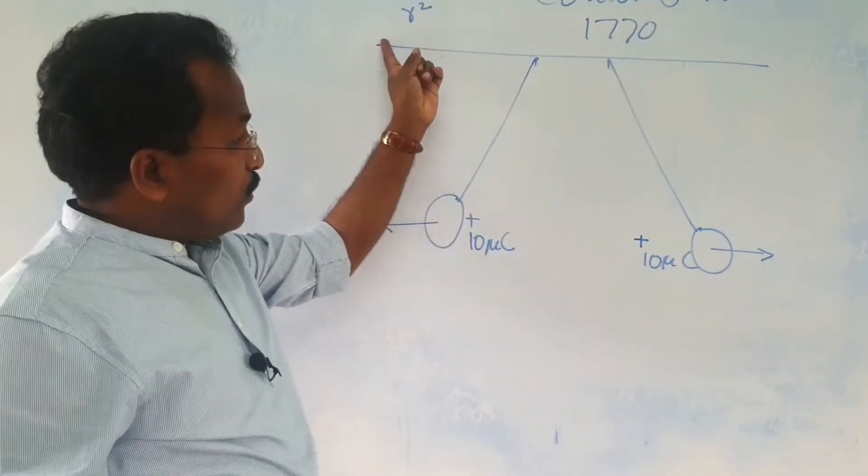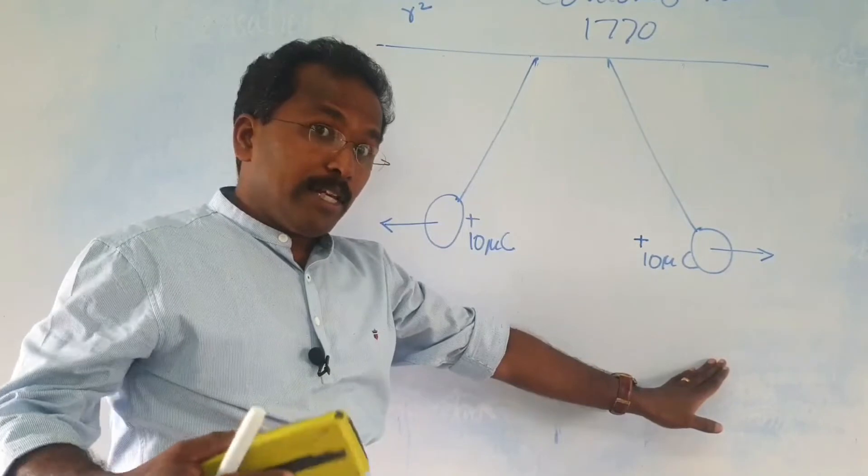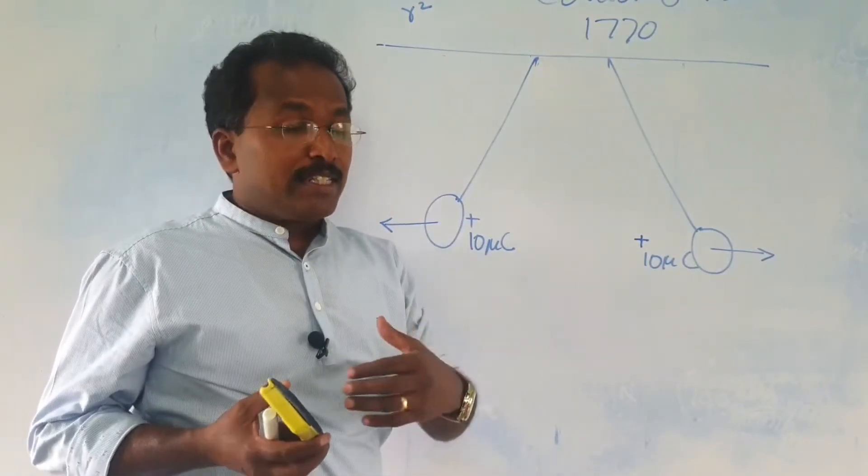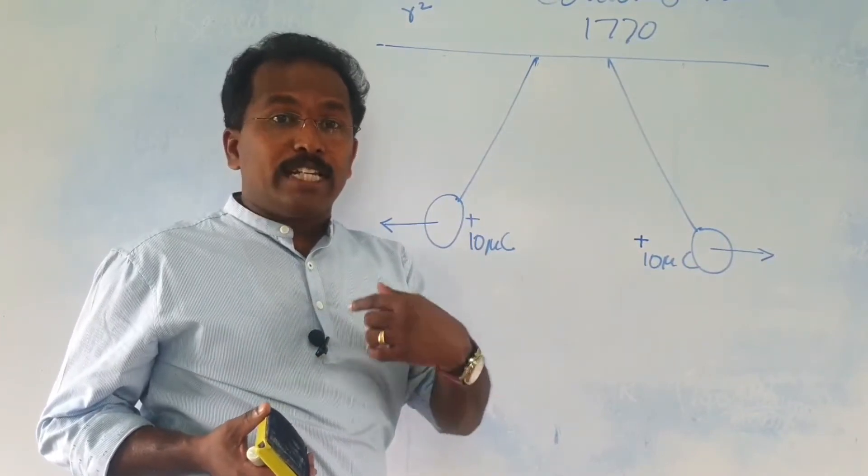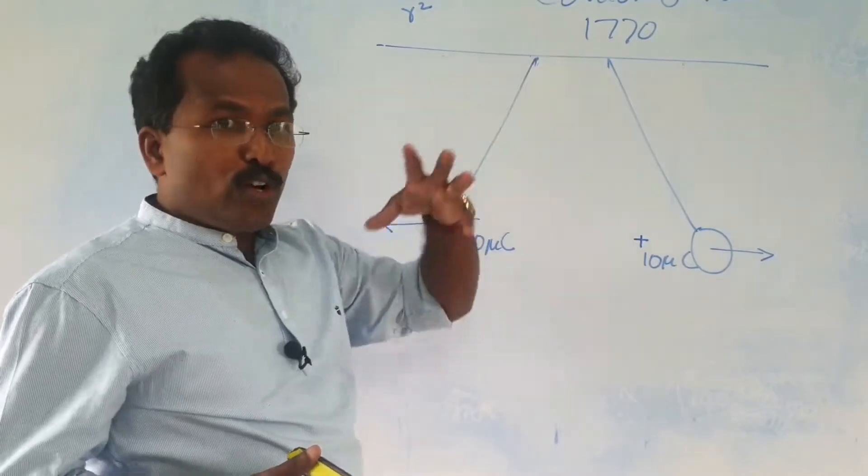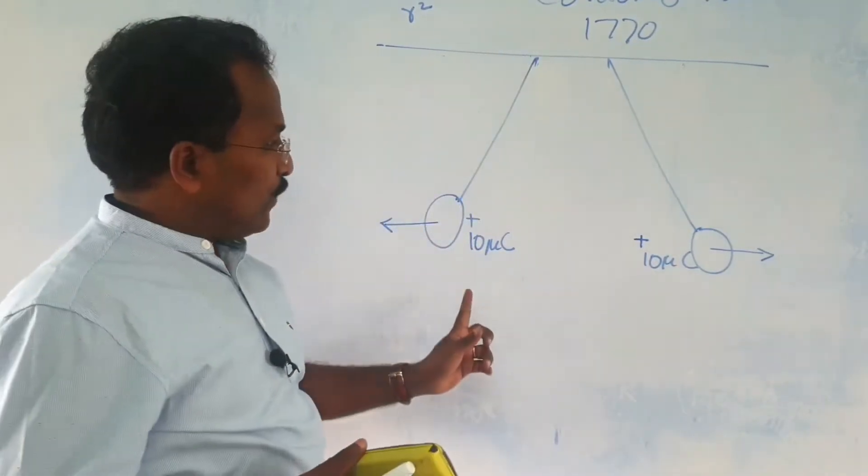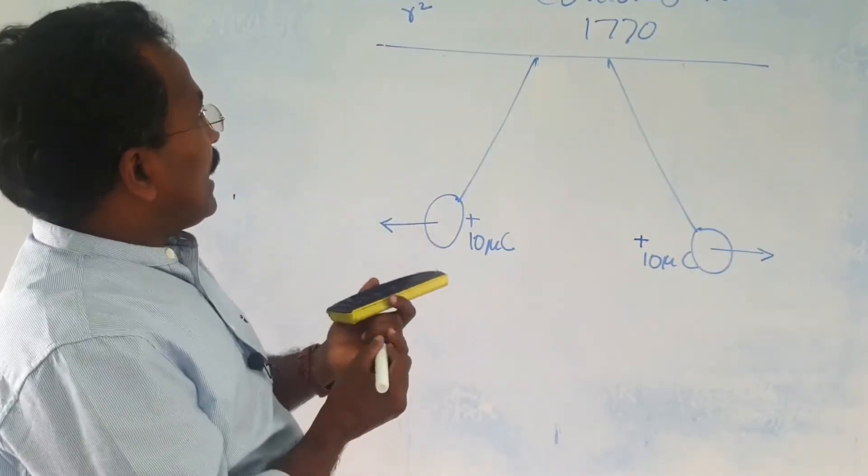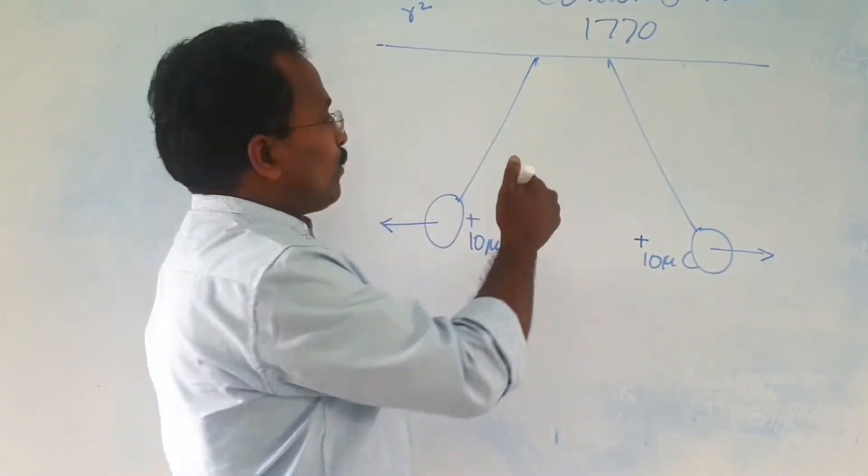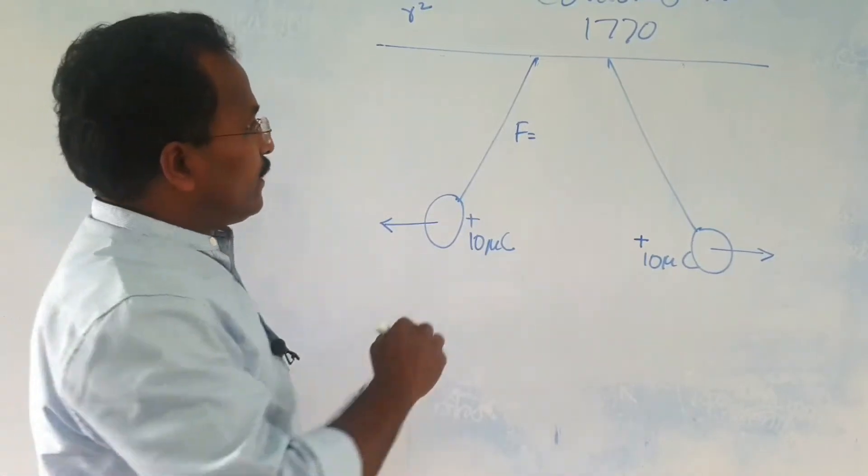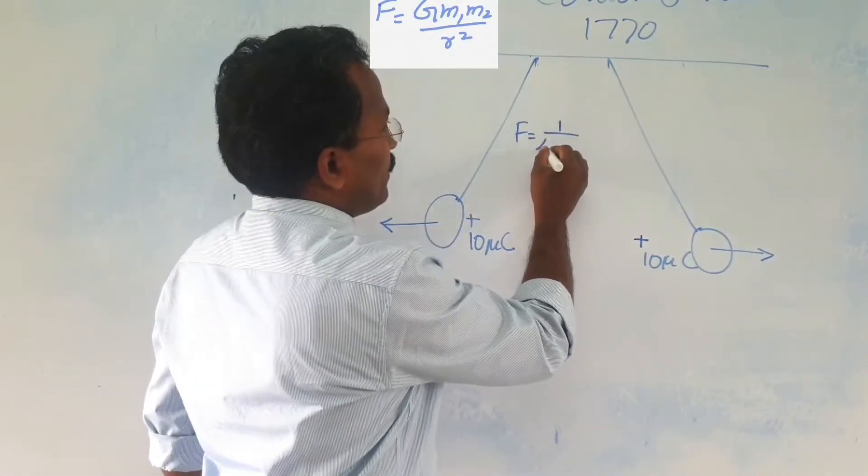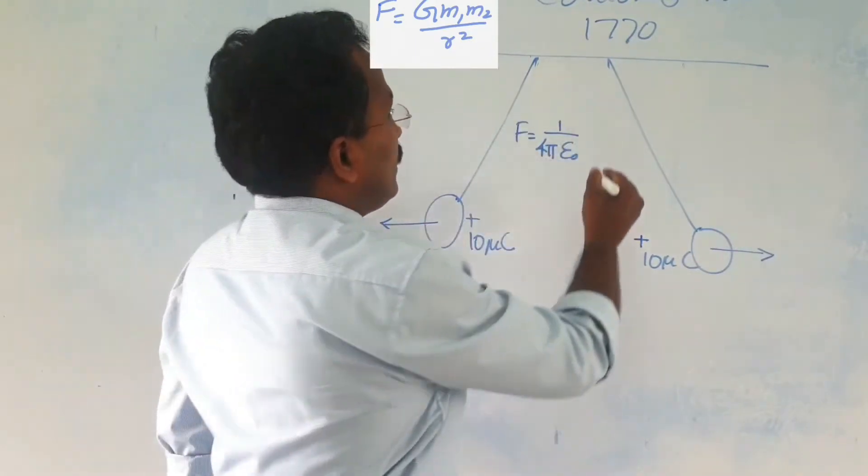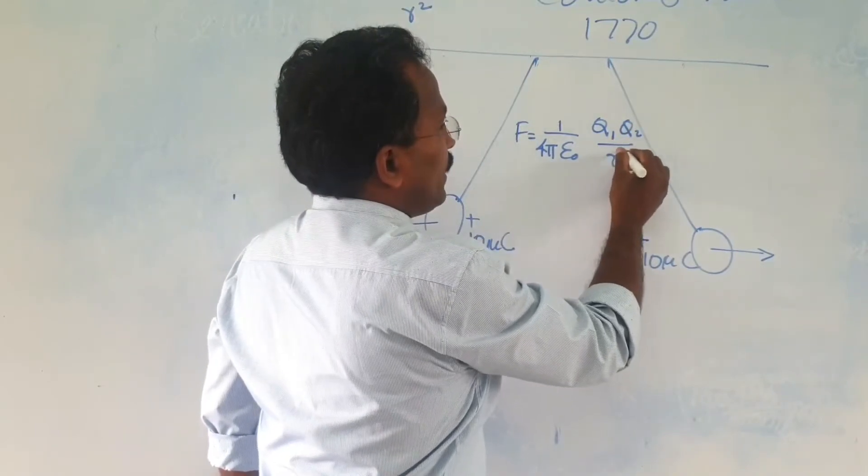Coulomb was aware of this law. So he found a new law using experiments, experimentally determined experiments and you know for finding that force he found a torsion balance. The same torsion balance that Cavendish later used for finding the gravitational constant. And it was he who found or devised this torsion balance for finding the force between two charges. And his law can also be written in a similar fashion like Newton's law. I am writing his law here, f is equal to 1 by 4 pi epsilon 0, that stands in the place of this g.